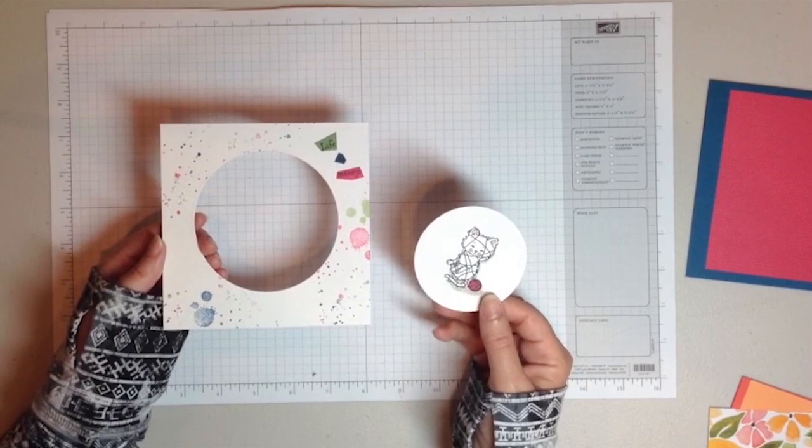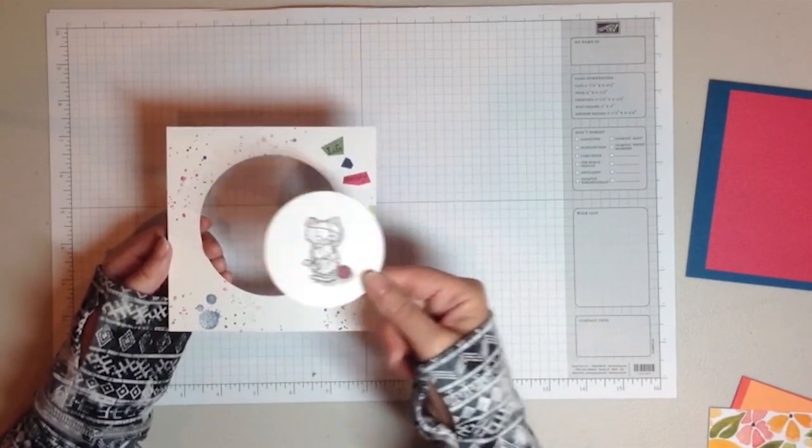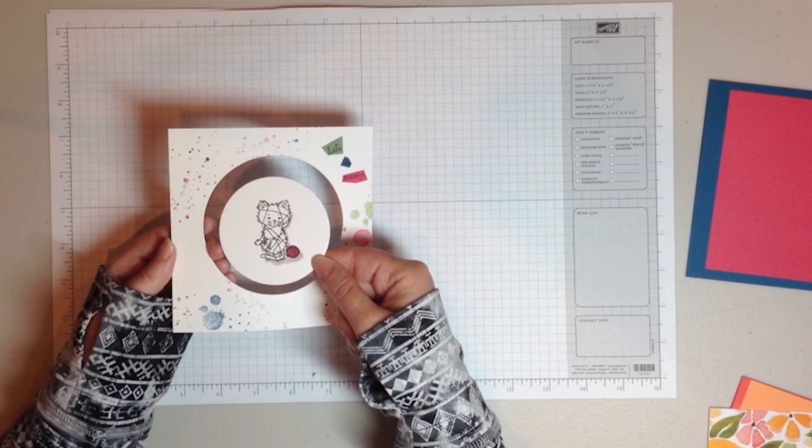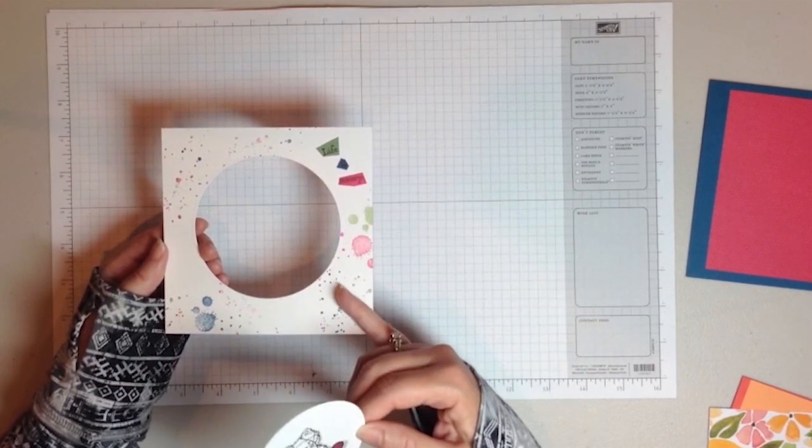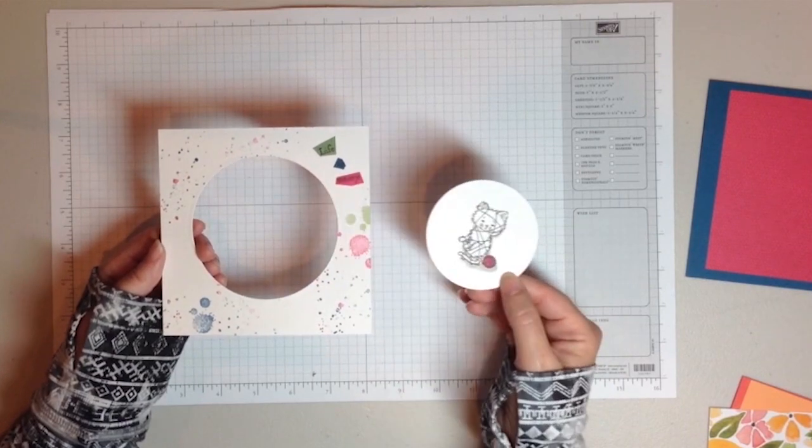Once those have been run through the Big Shot, stamp as desired. I did some stamping on the outside, added a little sentiment, and then I put the main image in the center of this one. Now you will not always be doing stamping because sometimes this will be DSP, so that is just an optional step.